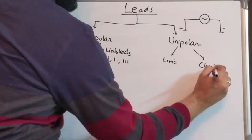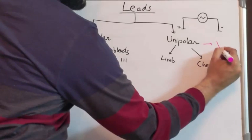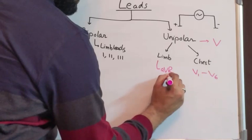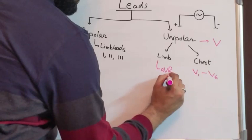Unipolar leads are either limb leads or chest leads. Now by convention, unipolar leads are designated by the letter V. So unipolar chest leads are V1 to V6 and unipolar limb leads are AVR, AVL, AVF - right arm, left arm, left leg respectively. The right leg is a neutral electrode.